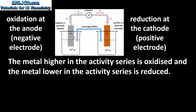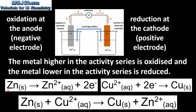The electron flow will be from the metal higher in the activity series, which is Zinc, to the metal lower in the activity series, which is Copper. Here we have the equations for the oxidation of zinc and the reduction of the Copper 2+ ions. The two half equations can be combined to form the net ionic equation, which you can see here.